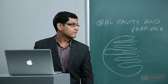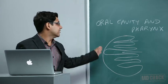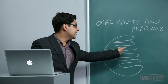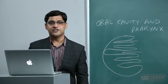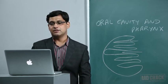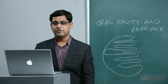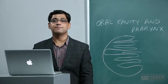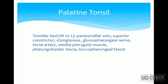The tonsillar bed is the lateral part of the tonsil. Important structures from medial to lateral are: paratonsillar vein, superior constrictor muscle, styloglossus, glossopharyngeal nerve, facial artery, medial pterygoid muscle, pharyngobasilar fascia, and buccopharyngeal fascia. This order from medial to lateral is important for MCQs.